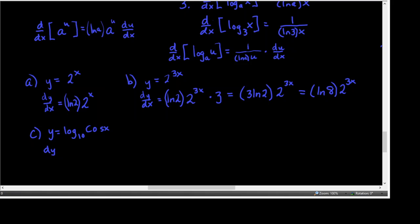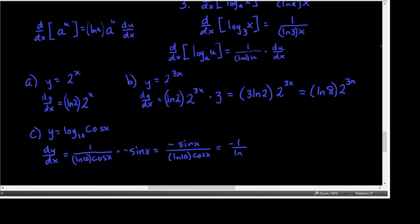Y equals log base 10 of the cosine of x. This is almost ln of something, but it's not. The derivative of ln of something would be 1 over that something. But because it's not base e, we have to multiply by the ln of that base in the denominator. And because that's not plain x, we have to think about the chain rule and multiply by the derivative of cosine x, which is negative sine of x. So that simplifies to negative sine of x over ln of 10 times cosine of x, which is negative 1 over ln of 10 times the tangent of x.